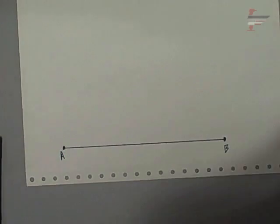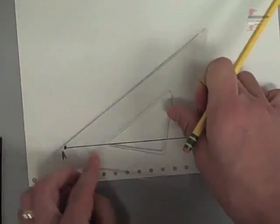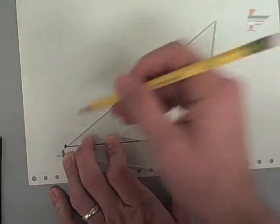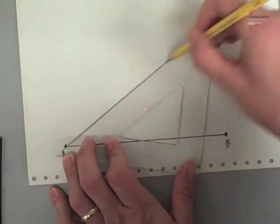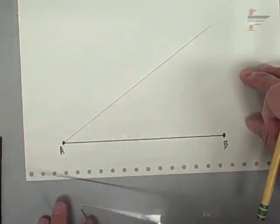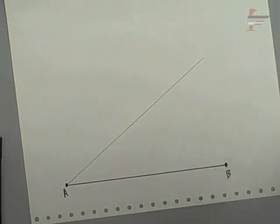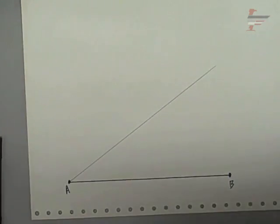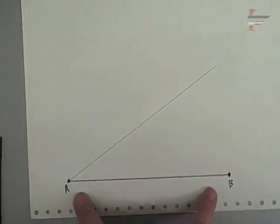The way that we're going to do that is we'll start by just extending a ray out from one of the endpoints. And now what we need to do on that ray is we're going to split up the ray into however many parts we are going to split up the original segment into.